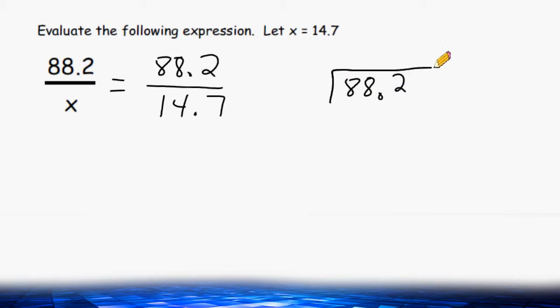So we have to take 88.2 and write it on the inside of our division sign, and the denominator is going to become our divisor, or 14.7.